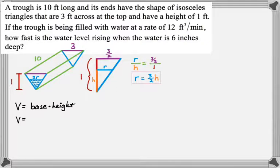So the area of the triangle is 1 half the base, which is 2r, times the height, which I called h in my little figure on the side. And then the height of the trough overall is 10, so I just have to multiply by 10. So, that's the area of the base is the triangle, the height in this case is the height of the trough, which is 10 feet long.